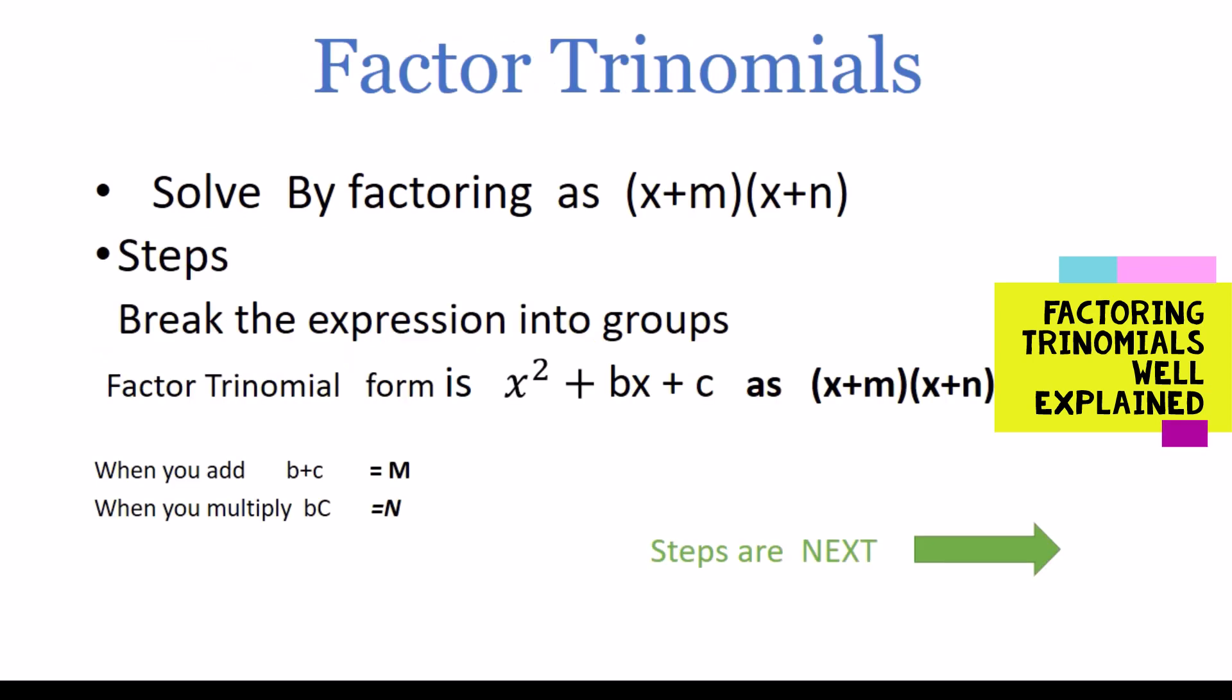The factor form can be solved as x plus m times x plus n. In the example what we do is break the expression into groups where we write as x plus m times x plus n and how we got to the m.